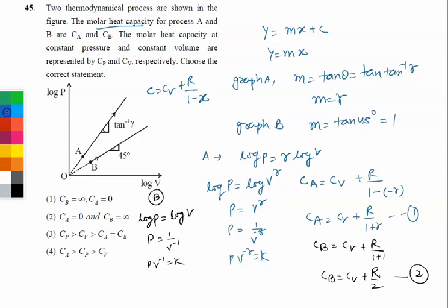We also know the standard equation that is CP - CV = R, so CP = CV + R. This is equation number 3.